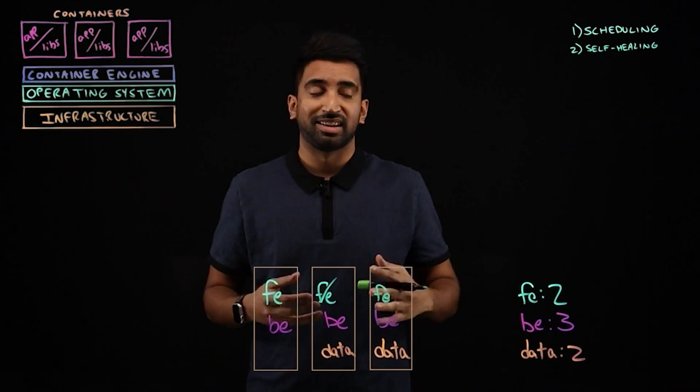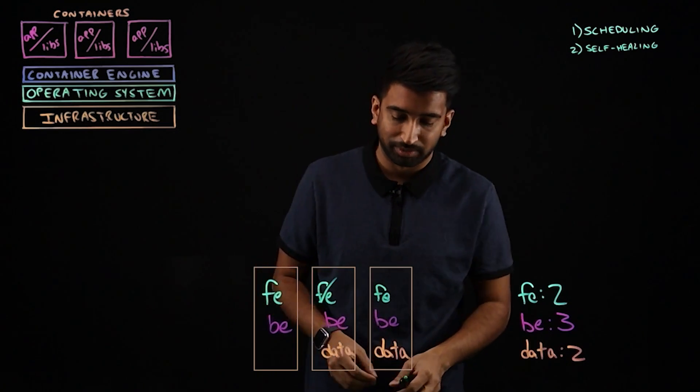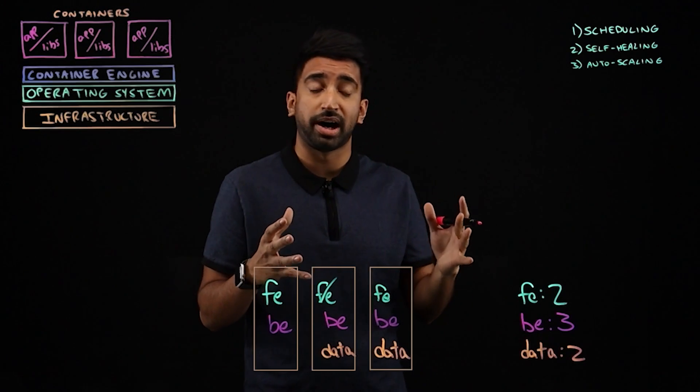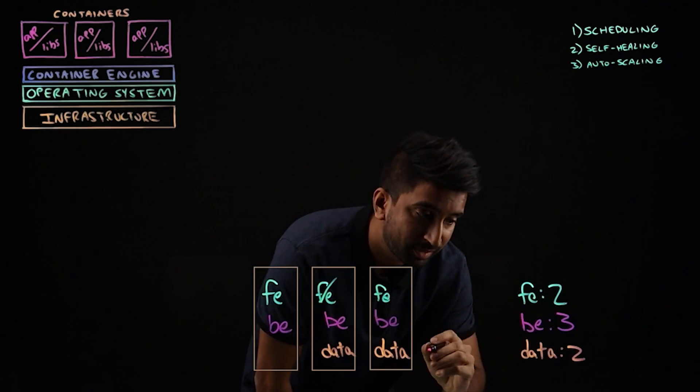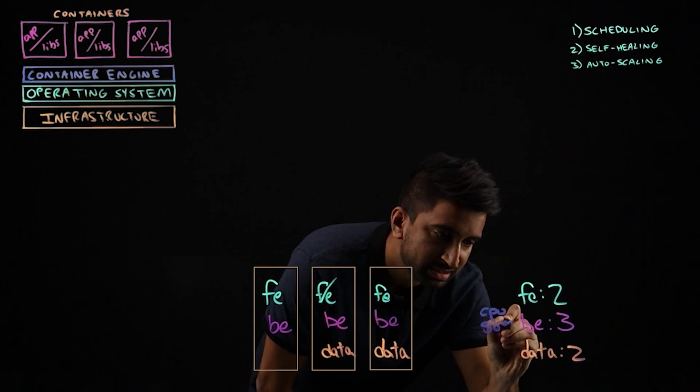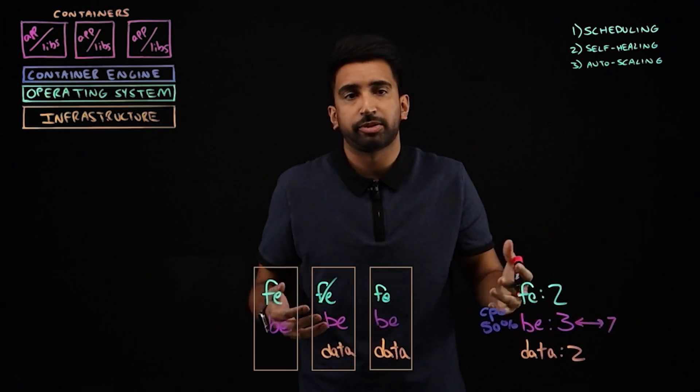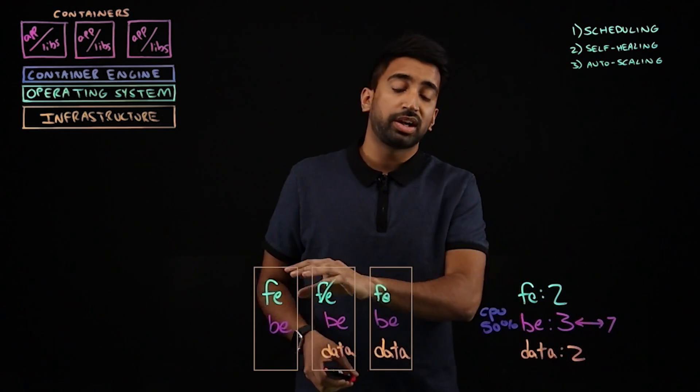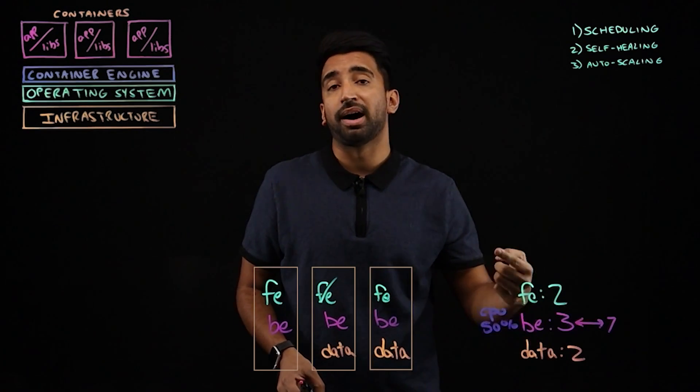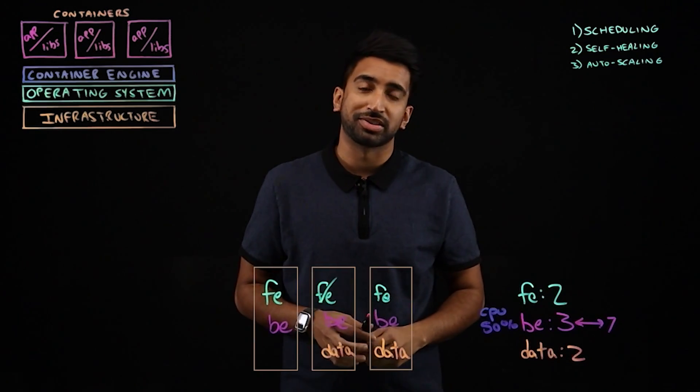But let's talk about scaling. Now I can manually bump this number up and Kubernetes will handle it for me. But auto scaling is also critical here. Now out of the box, Kubernetes supports horizontal pod auto scaling. Essentially, what that means is if for this back-end, I want the CPU target to be 50%. In addition, I want to tell Kubernetes that you can scale this all the way up to say seven pods. So if that CPU target of the running containers pods exceeds 50%, it's going to start adding more pods to keep that target at 50.